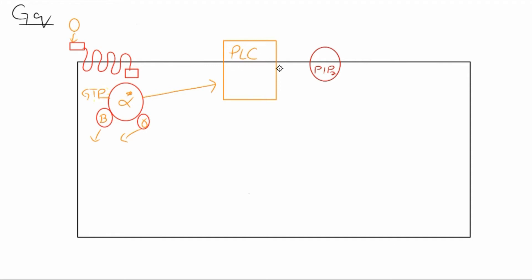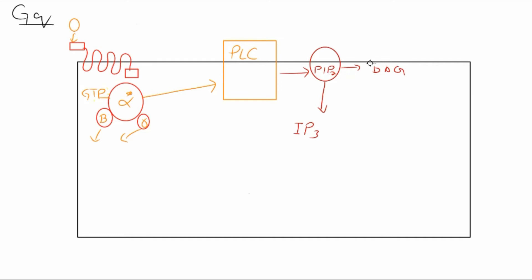Whenever phospholipase C attacks PIP2, PIP2 is separated into two components. One component is inositol diphosphate, also known as IP3 — it is water-soluble and comes into the cytosol. The other is lipid-soluble and remains in the cell membrane: diacylglycerol, also known as DAG. So PIP2 splits into IP3 and DAG.